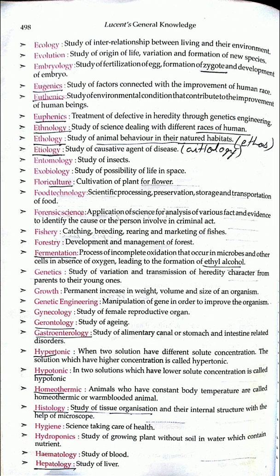Entomology is the study of insects. We have discussed in detail why it is called entomology in the Word Power Made Easy book. Exobiology is the study of the possibility of life in space. Floriculture is the cultivation of flowering plants.